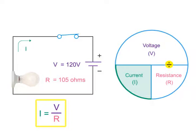Using the Ohm's law circle and solving for current, you would divide the voltage by the resistance. So, 120 volts divided by 105 ohms is 1.142 amps. So, you have 1.142 amps of current flowing through the light bulb.